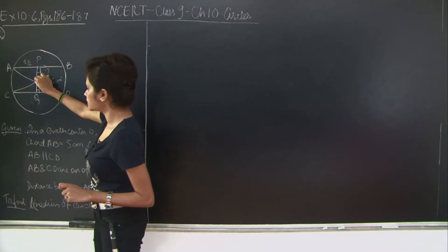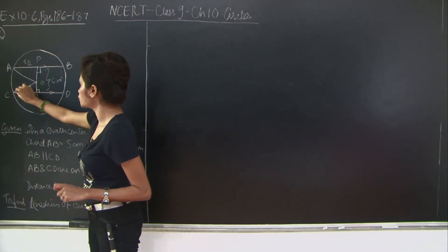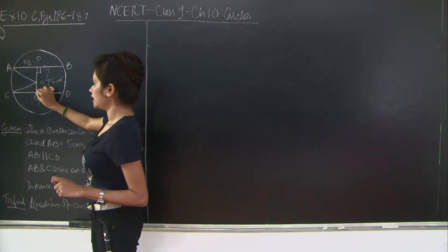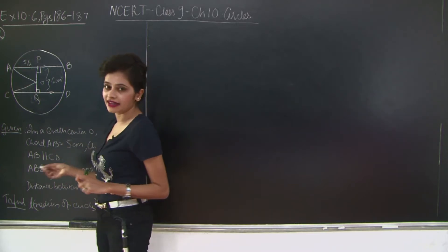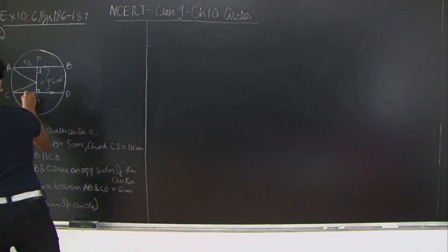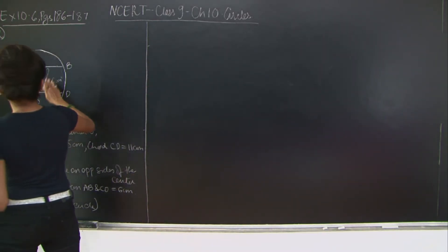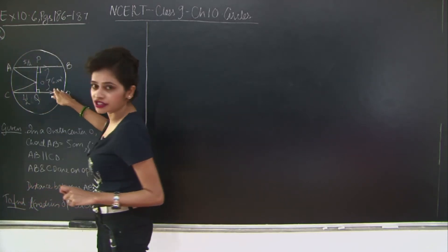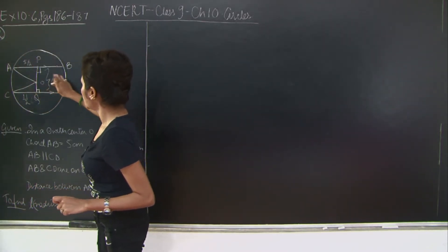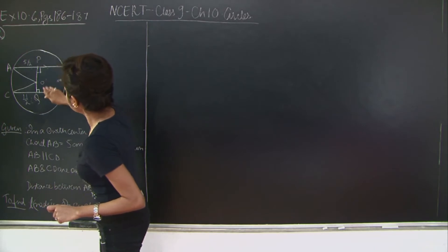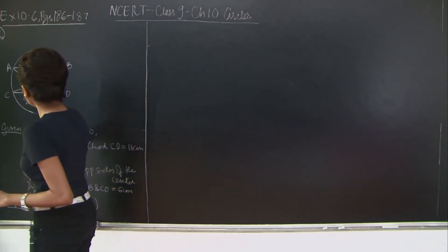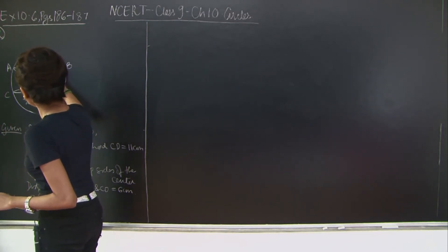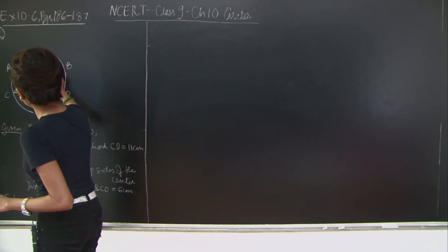Similarly, OQ is perpendicular from the centre to chord CD which is 11cm, so CQ is 11/2 cm. The length PQ is 6cm. Let's call OQ = X, therefore OP = 6 - X.